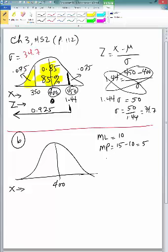And we know that marginal loss is $10 and marginal profit is $15 selling price minus the $10 cost, which is $5.